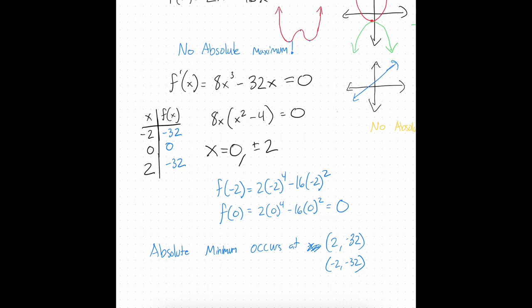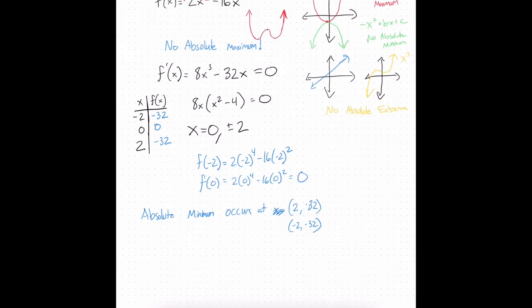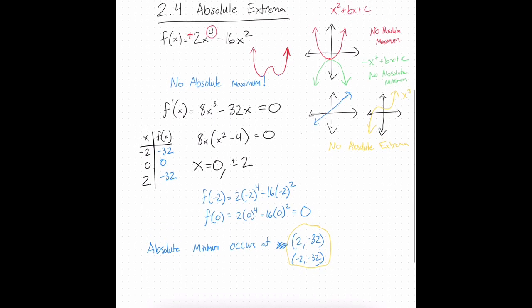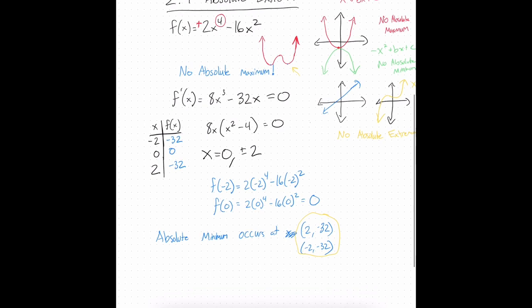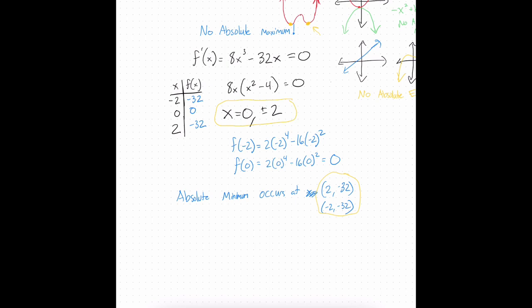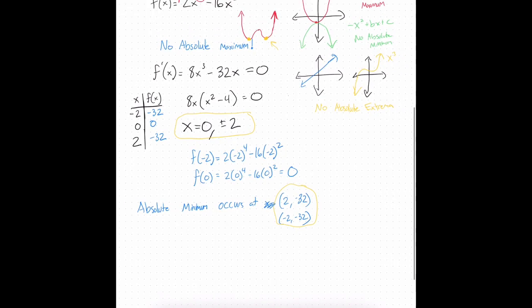My output for negative 2 and positive 2 are both lower than my output for zero, and the outputs are the same. So my absolute minimum occurs at two points: at (2, negative 32) as well as (negative 2, negative 32). I know the shape of the graph looks like it goes up on both ends, which means the absolute lowest points have to occur at the local minimums, which have to occur at one of my critical points. Based off those two logical pieces, these have to be my absolutely lowest points.